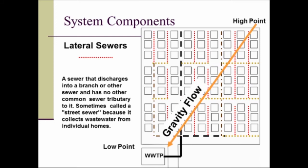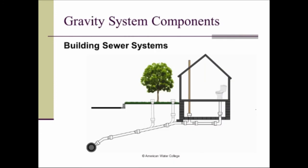What flows into the laterals? That would be the building sewer systems. As you can see here, all this piping connected to the building before it goes into the city's sewer system is called the building sewer system. The point that it connects to the sewer and becomes the city's responsibility, everything up to that point is considered part of the building sewer system.